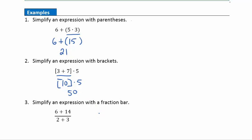Example three: simplify the expression with a fraction bar. In the numerator, 6 plus 14 equals 20. In the denominator, 2 plus 3 equals 5. A fraction bar represents division, so this reads 20 divided by 5, which equals 4.